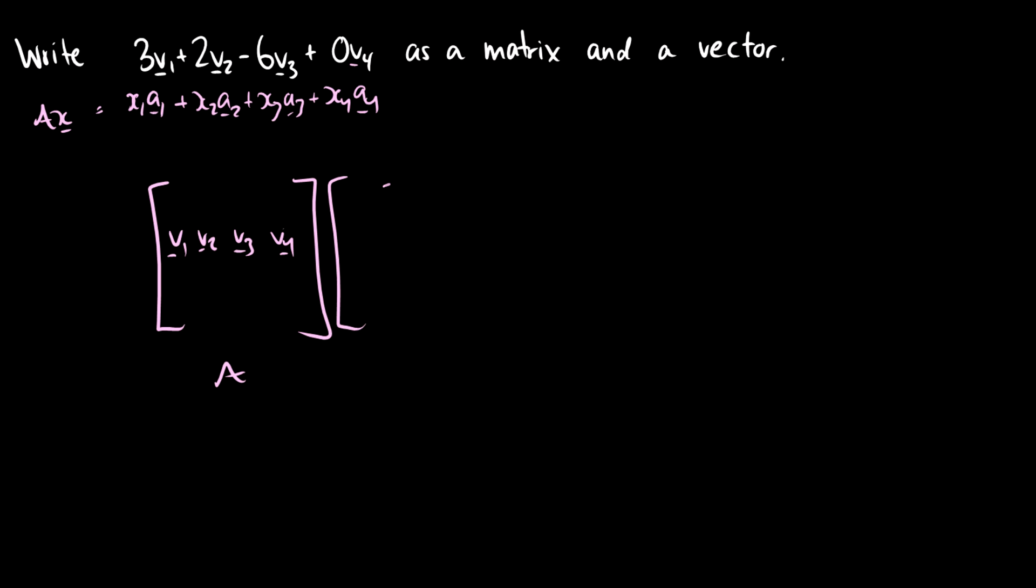Now what does x look like? Well, x has four entries, x1, x2, x3, and x4, and these are clearly our coefficients. So this will be 3, 2, negative 6, and 0.